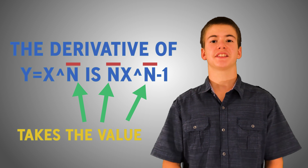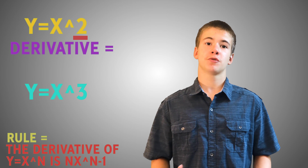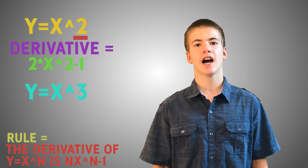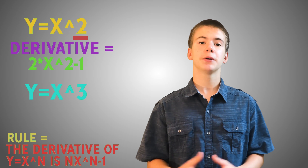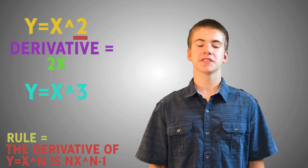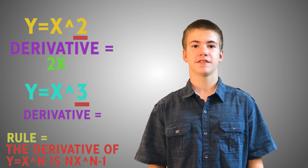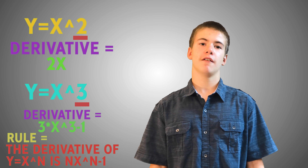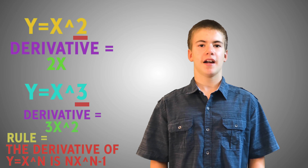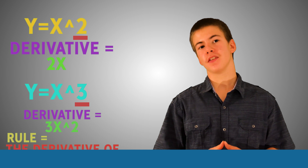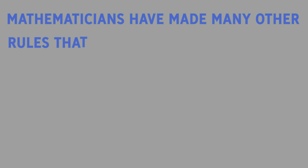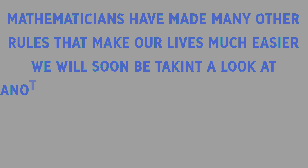Let's try this rule out. In y equals x squared, our exponent, or n, is 2. So according to our rule, the derivative is 2 times x to the power of 2 minus 1, which we can rewrite as 2x. For the function y equals x to the 3rd power, n is equal to 3, and so the derivative is 3 times x to the power of 3 minus 1, which we can rewrite as 3x squared. This is much easier than the method we used before. Mathematicians have made many other rules that make our lives much easier.